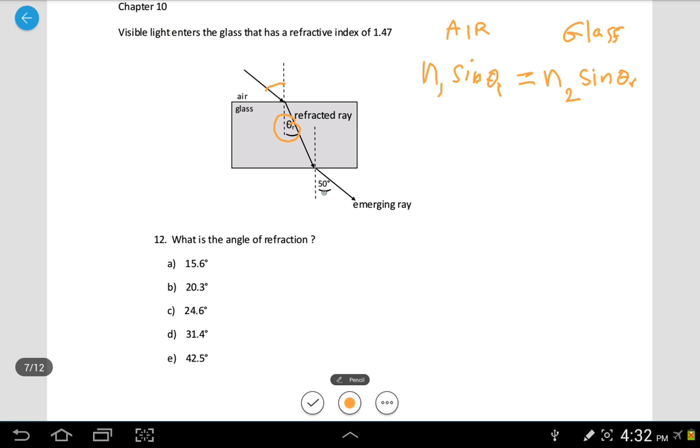This angle and this angle, the emerging ray's angle, should be equal. So this means that the light incidents at 50 degrees. Now we know the value of air - N of air or refractive index of air is always 1. It's a constant.